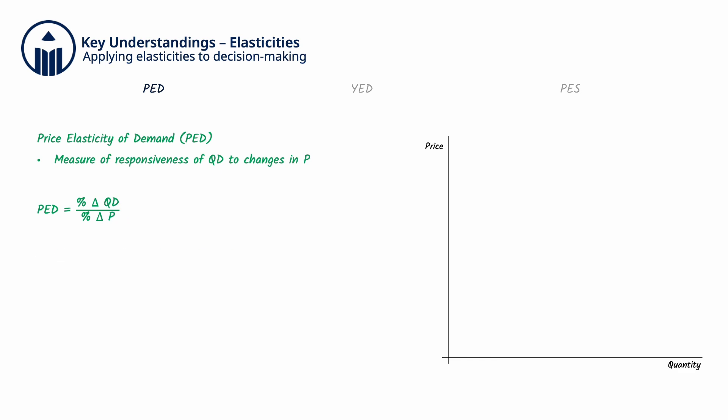PED is always negative because quantity demanded and price always move in opposite directions, according to the law of demand.